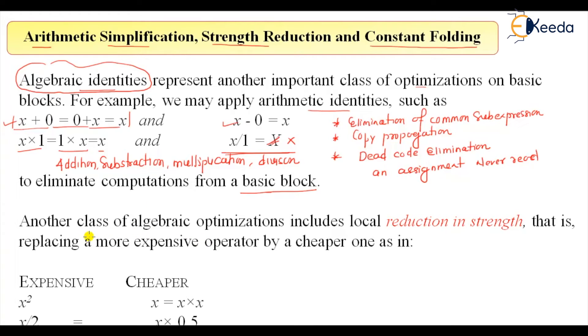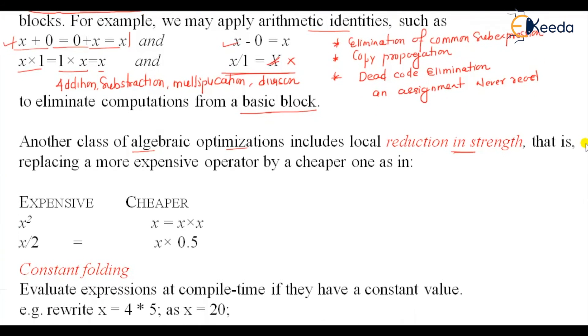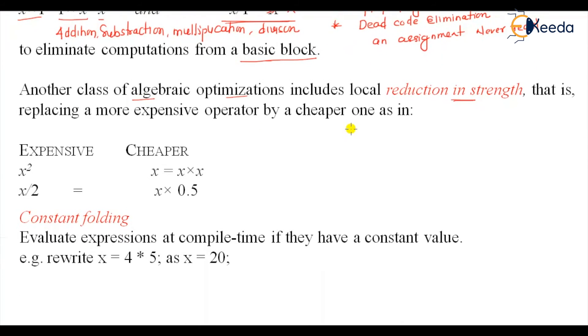I have already discussed this previously - that there is a reduction in strength, and that is replacing a more expensive operator by a cheaper one. So x squared, that is a power, and x squared can be replaced by x multiplied by x. And sometimes also I said that x multiplied by x can also be replaced by... okay, x into x is x squared... 2x, sorry, 2 multiplied by x can also be replaced by x plus x.